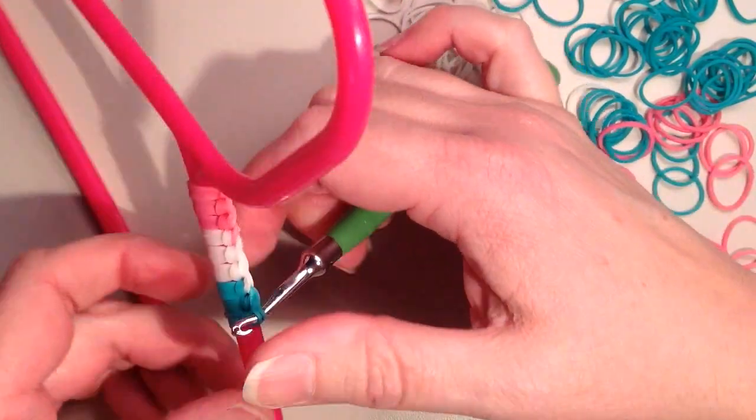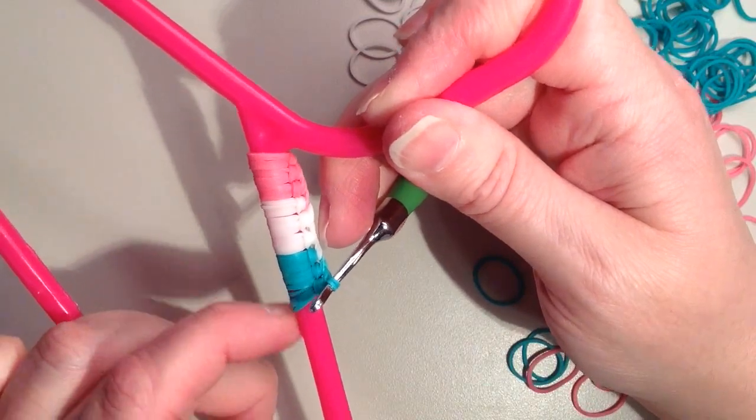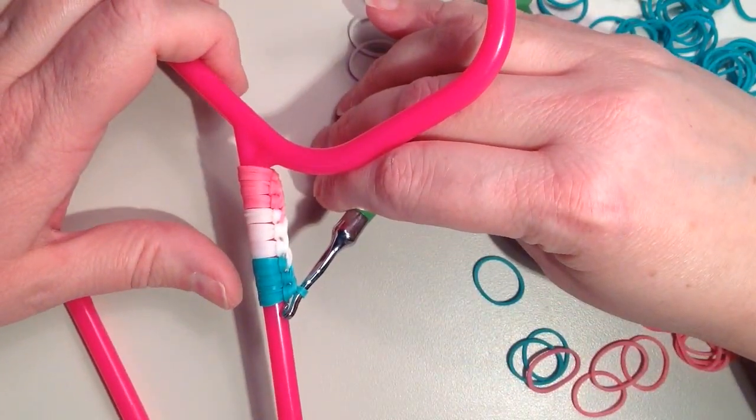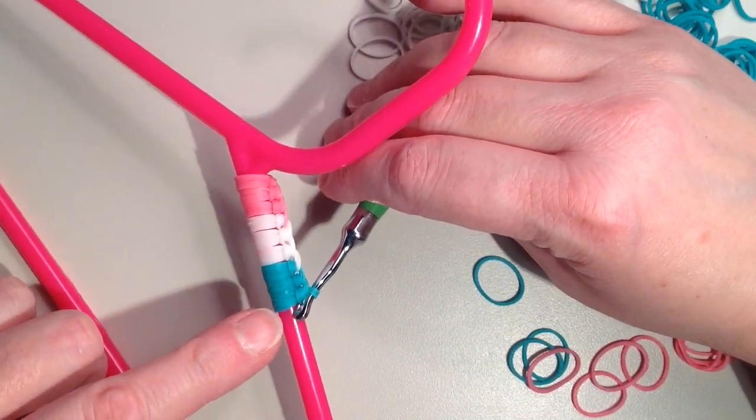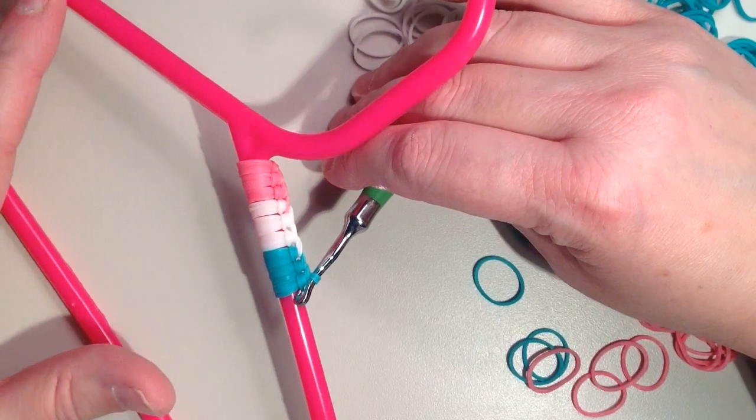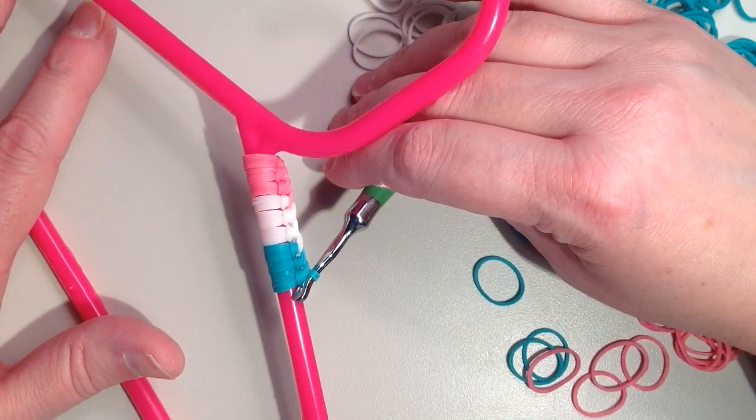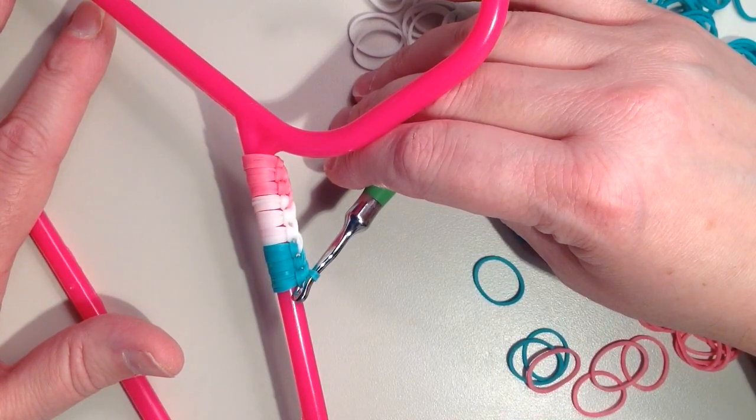You can see this looks like it's sticking out a little bit. So I'm just going to pull this back. And so I'm just going to continue on in this pattern. I'm going to do white next. I'm going to do white in between every other layer here. So I will just fast forward here, and when I get to the end, I will show you how to tie it off.